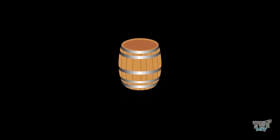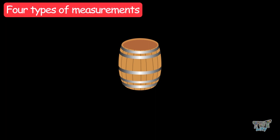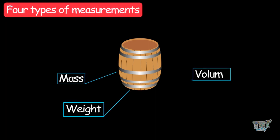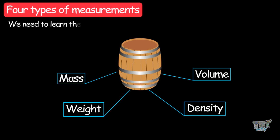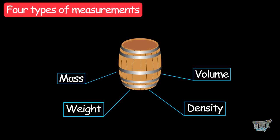For every object, we have four types of measurements: mass, weight, volume, and density. We need to learn these before we learn the concept of buoyancy. Mass and weight are often used interchangeably in general, but they have different meanings.